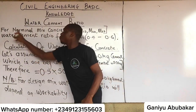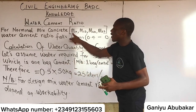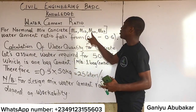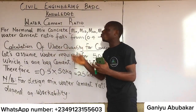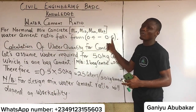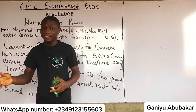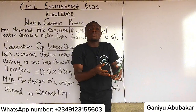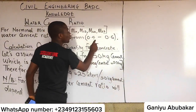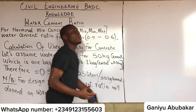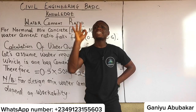For nominal mix ratios — M10, M15, M20, M25 — the water cement ratio falls from 0.4 to 0.6. This is a very important concept. When it comes to calculating water cement ratio, the value ranges between 0.4 and 0.6.